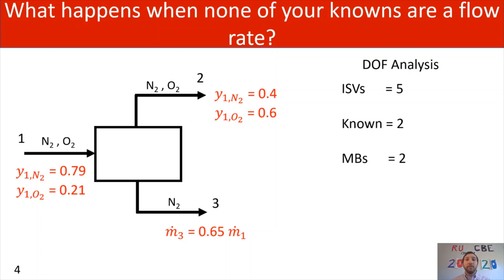And that's right by stream 3, where I gave you a process specification. I gave you a relationship between stream 3 and stream 1's flow rates. And because I have that process specification, I am able to reduce my degrees of freedom by another value of 1. Now, I have 0 degrees of freedom. But I also don't have any flow rates. So what do I do in that case?